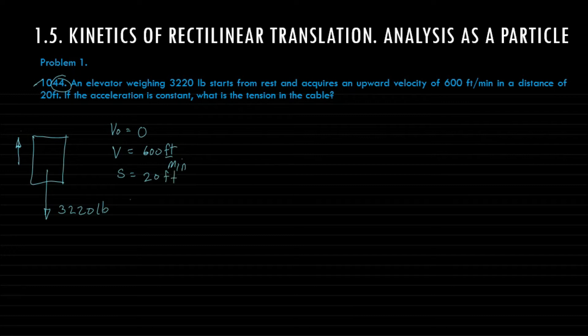If the acceleration is constant, what is the tension in the cable? So the required here is the tension in the cable. Let us denote that unknown as T. If this is your elevator, this is the unknown tension.